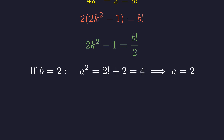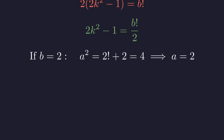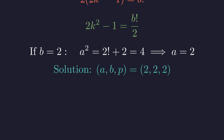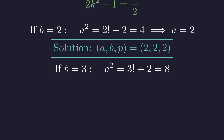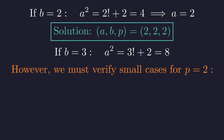If B is 2, A squared equals 4, which means A equals 2. All conditions are met: A and B are positive integers and P is prime. Our first solution is A equals 2, B equals 2, and P equals 2. If B is 3, A squared equals 8, which has no integer solution for A. For P equals 2, our general argument doesn't immediately apply because P squared equals 4, which is the same as P to the power P. We need to check small values of B directly.